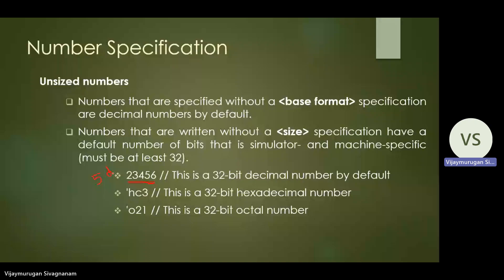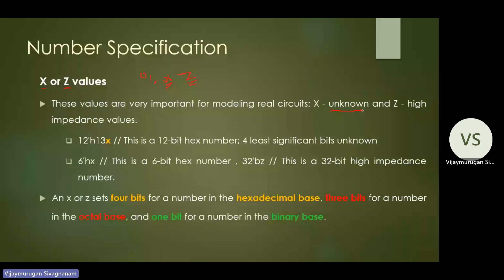In Verilog HDL and digital electronics, numbers can include special values: 0 means low, 1 means high, 'x' represents unknown values, and 'z' represents high impedance values. For example, '12'h13x' — here 12 is the size, 'h' is hexadecimal, '13x' is the value where 'x' means the least significant bit is unknown.